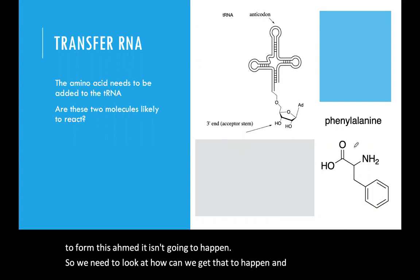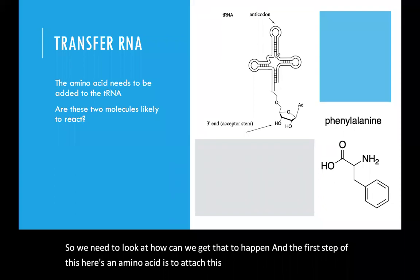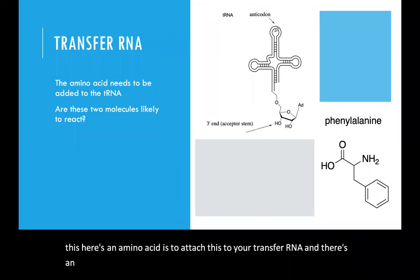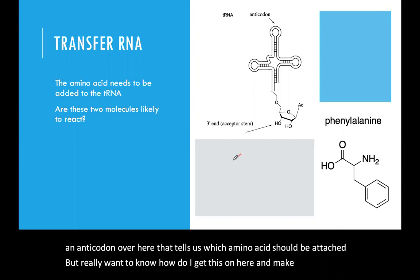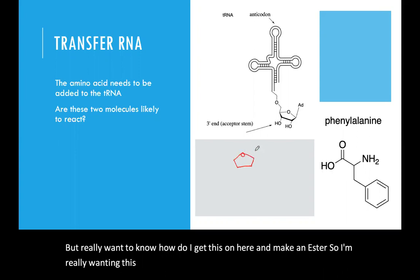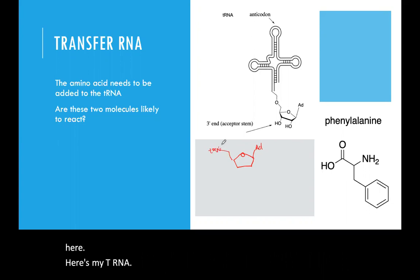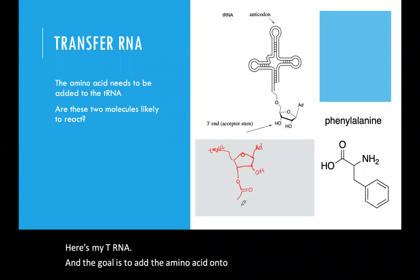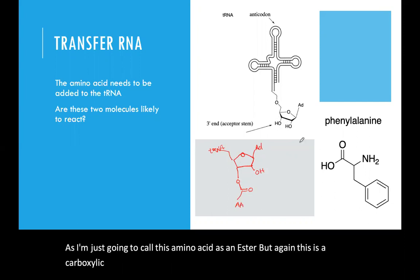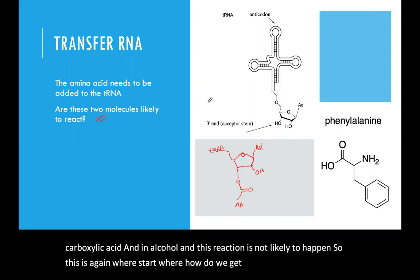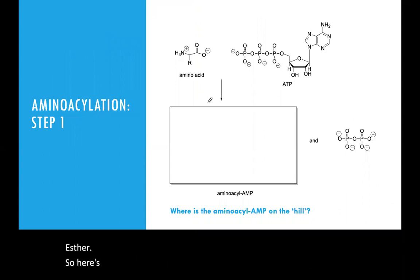The first step is to attach this amino acid to your transfer RNA. There's an anticodon that tells us which amino acid should be attached. But really, we want to know how do I get this on there and make an ester. So I'm wanting to add the amino acid onto this transfer RNA as an ester. But again, this is a carboxylic acid and an alcohol, and this reaction is not likely to happen. So how do we get there? I need to make that ester.